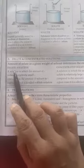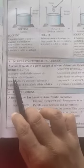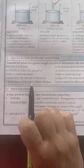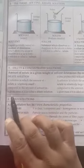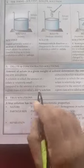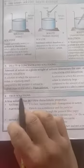So first of all, we will see what is a dilute solution. A solution in which the amount of solute is relatively small as compared to the amount of solvent in a given mass is called a dilute solution. Understood what is dilute solution?